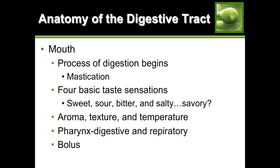The anatomy of the digestive tract: digestion begins in the mouth with mastication or chewing. In your mouth you have your tongue and four basic taste sensations - sweet, sour, bitter, and salty. Some people say there may be a fifth one: savory. Whatever your mouth feels or tastes also influences your food choices - aroma, for example. Think of when you're sick and can't smell because your nose is stuffy; you can't taste things.